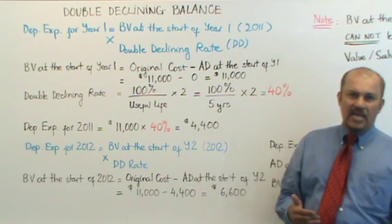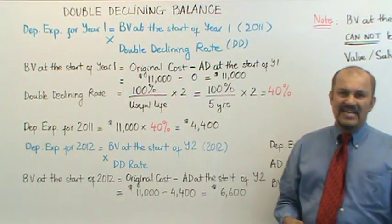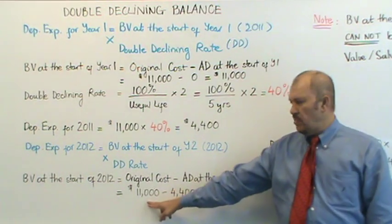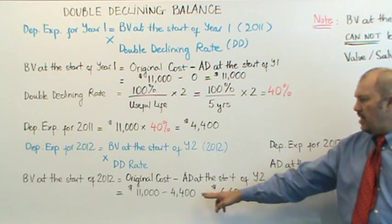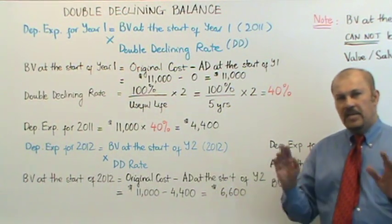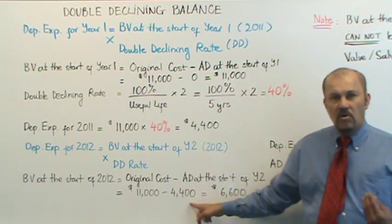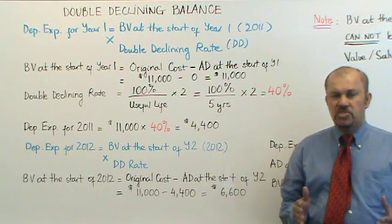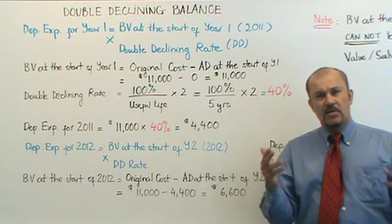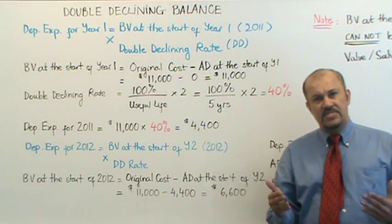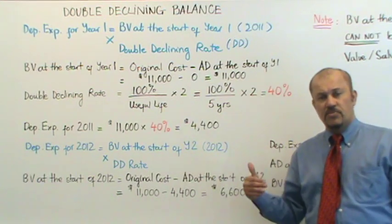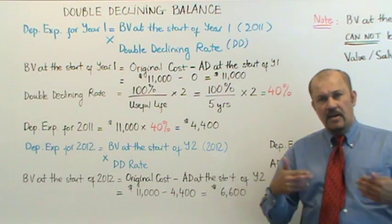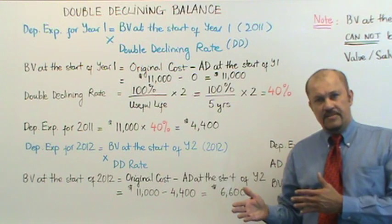This is the same logic as your ending cash balance for one year being the same as your beginning cash balance for the next year, or your ending inventory of one year automatically becoming the beginning inventory of the next year. So when we put the numbers into the formula, it's $11,000 original cost minus $4,400 accumulated depreciation at the end of year one. The $4,400 was our depreciation expense for year one, and it is also your AD at the end of year one. Accumulated depreciation is the total depreciation you've taken on an asset from the day you bought it until today, which in this case is the end of year one.